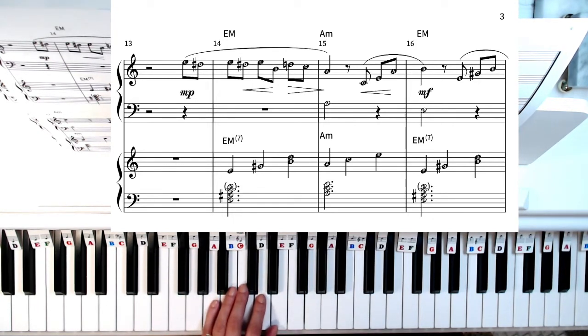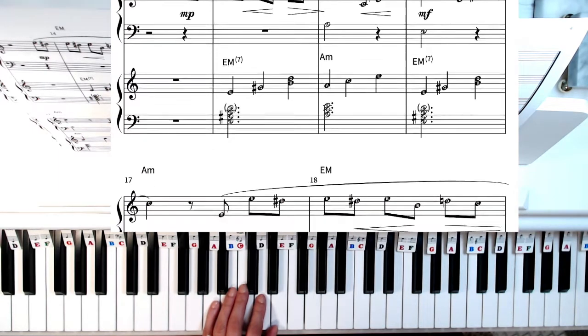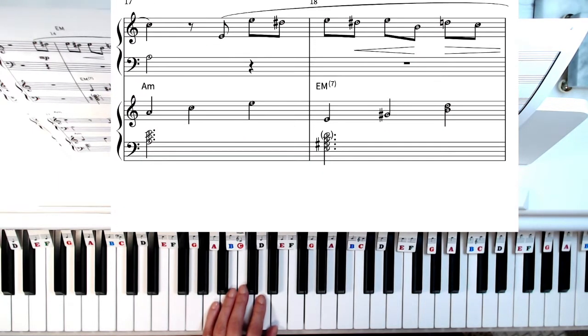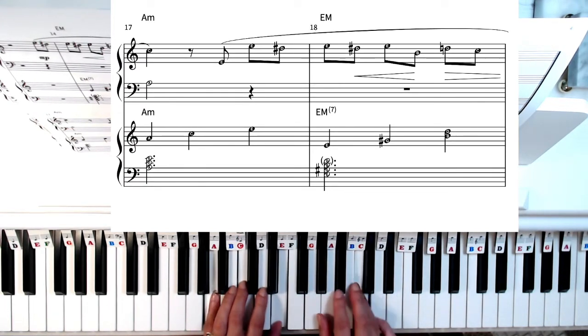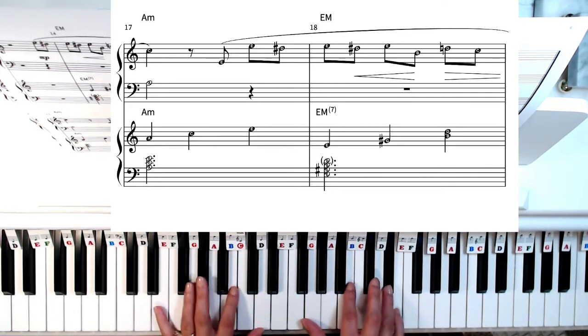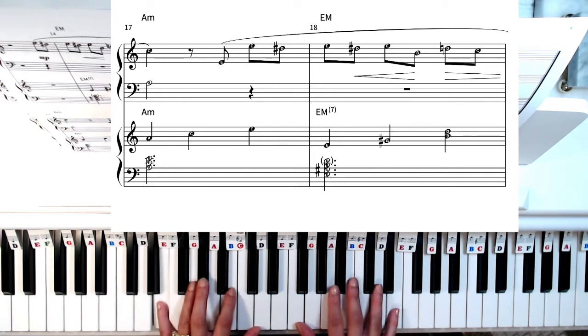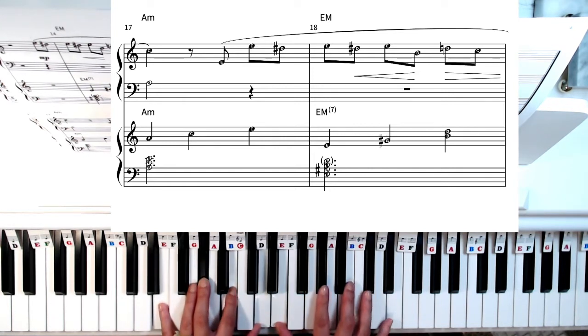Now if you've guessed it, we're going to go back to the A minor chord again. Yes, again. I know it's repetitive but actually it just makes it easier for you to learn. So A minor. The notes are A, C, and E. E major or E major seventh. E, G sharp, B, and D.